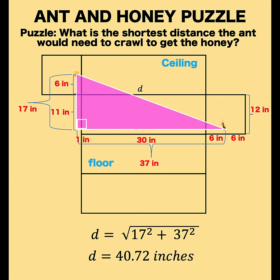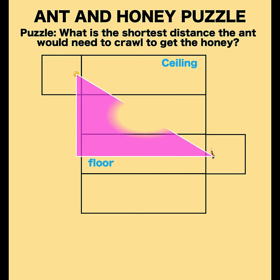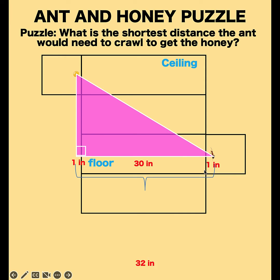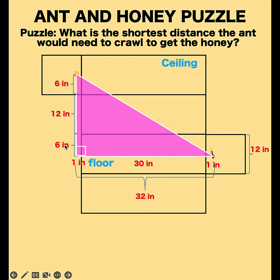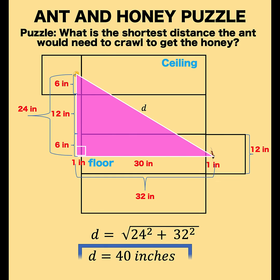This is lower than the 42-inch initial value, but it's not yet the least possible distance. Let's try opening the box through the floor and ceiling instead, positioning the ant and honey with respect to the ceiling and floor. The ant is located 1 inch from the corner, the box length is 30 inches, and the honey is 1 inch from its corner. The base is 1 plus 30 plus 1, which is 32 inches. For the height of the right triangle, this is 6 inches plus 12 inches plus 6 inches, which is 24 inches. Solving for D: D equals the square root of 24 squared plus 32 squared, which gives D equals 40 inches. This is the least possible distance the ant has to crawl to get to the honey.